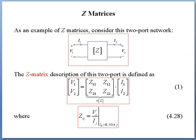Let us recap what Z matrices is. As an example of Z matrices, please consider this two-port network. You have port 1 with V1 and I1, and port 2 with V2 and I2. The Z matrix description of this two-port network can be defined as [V1, V2] equals [Z11, Z12; Z21, Z22] times [I1, I2], where Zij equals Vi over Ij.